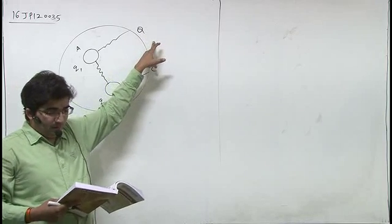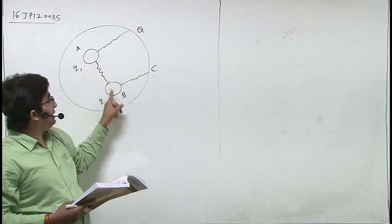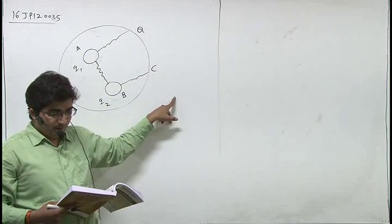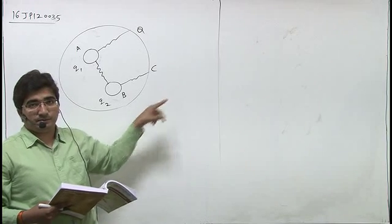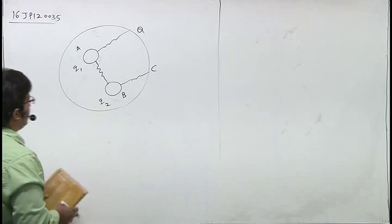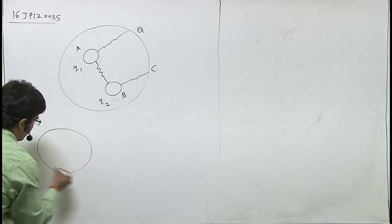If all three conductors are connected by conducting wires as shown, then what will be the charges on A, B, and C respectively? Let's solve this example.